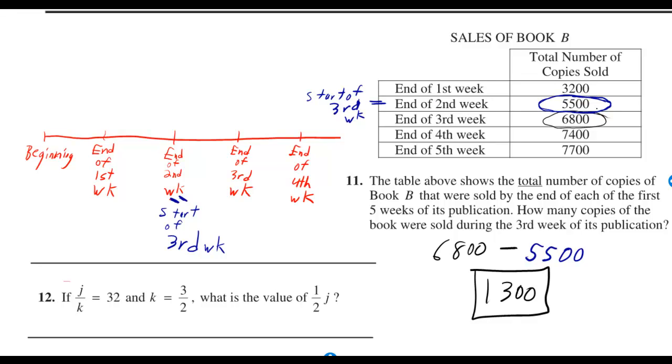They sold 5,500 magazines by the start of the third week, 6,800 by the end of the third. So there must have been 1,300 that were sold during the third week.